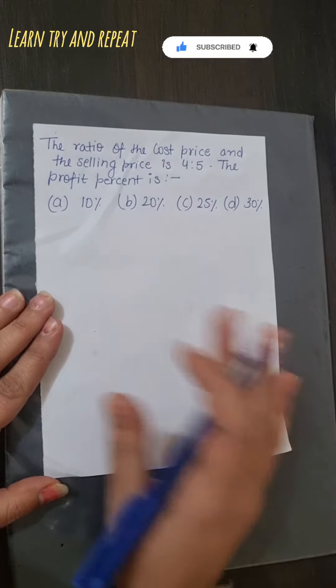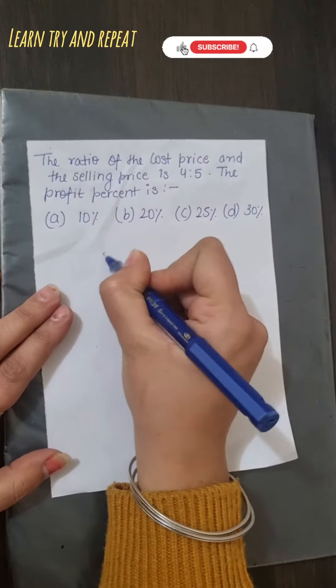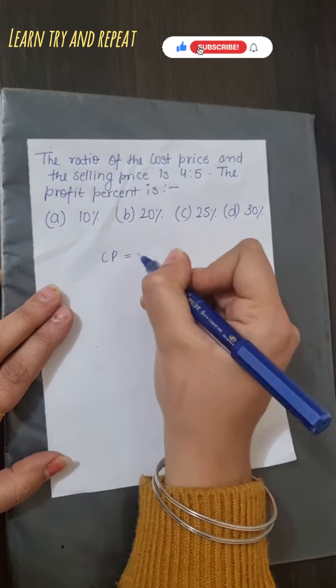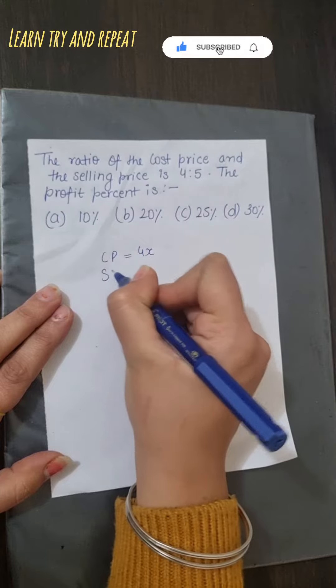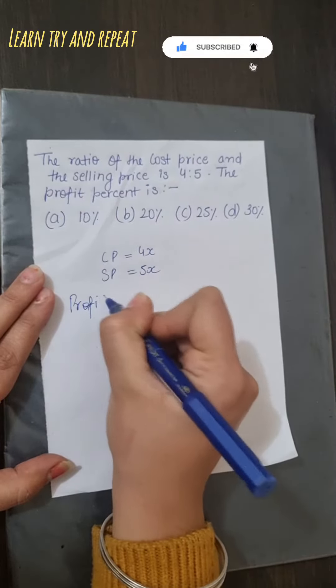This question is very simple to solve. You can let your cost price be 4x and your selling price will be 5x. And you know what is profit and how we calculate it.